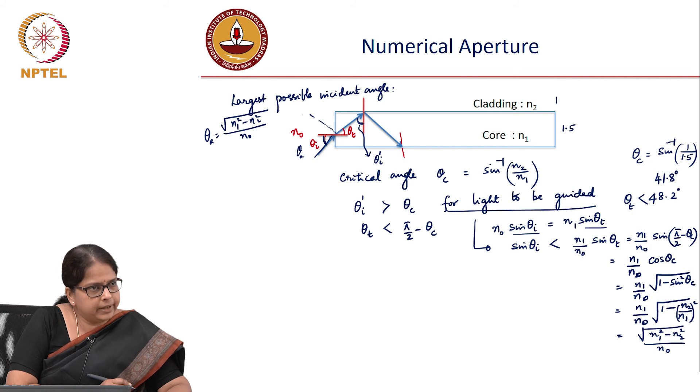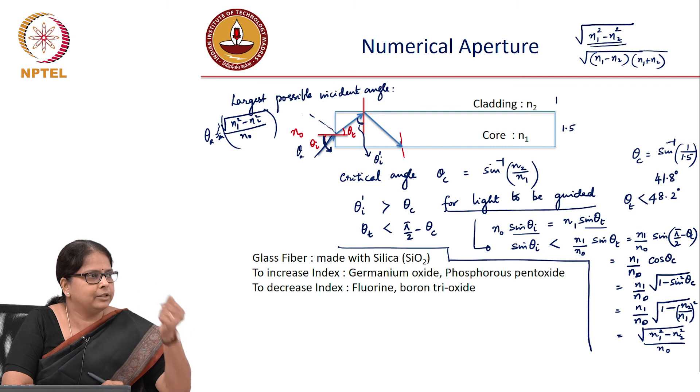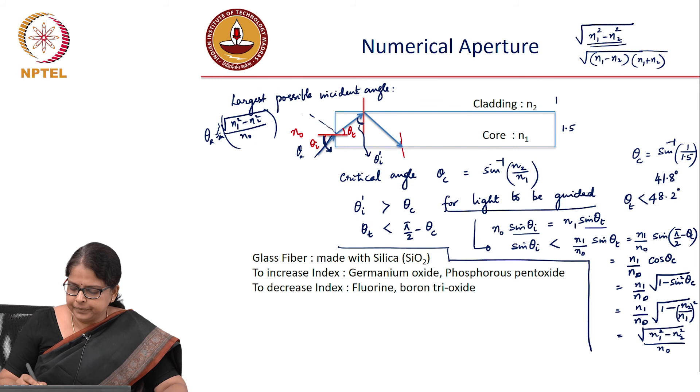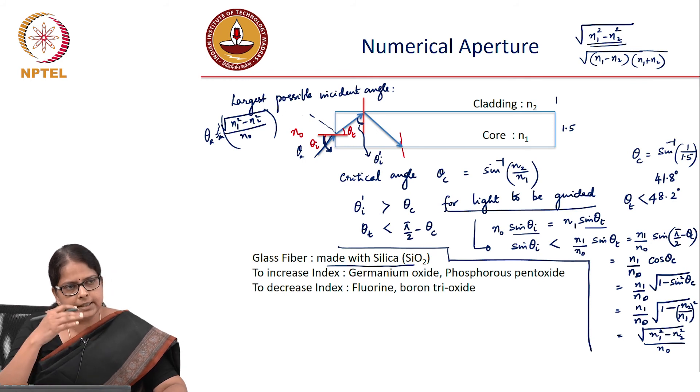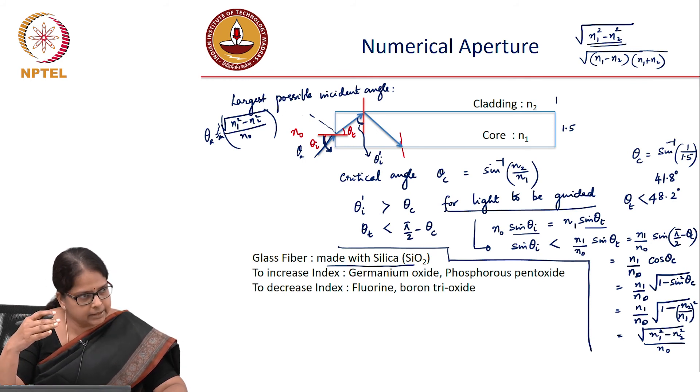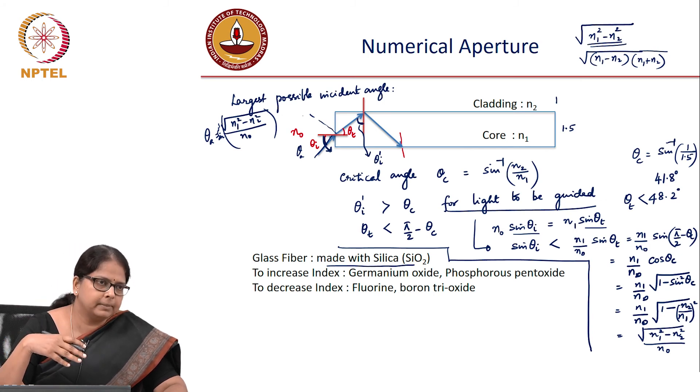Now, how do they make fibers? In commercial long-distance fiber, we use glass fiber. The patch cords you see are made of glass fibers, which means silica—SiO₂ is the base material. To make the core, you increase the refractive index of silica, and to make the cladding, you decrease it.